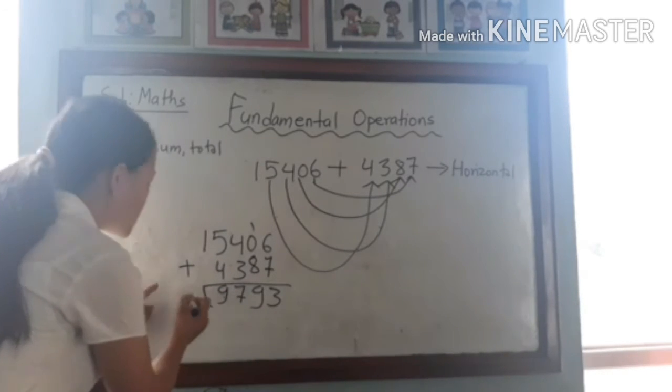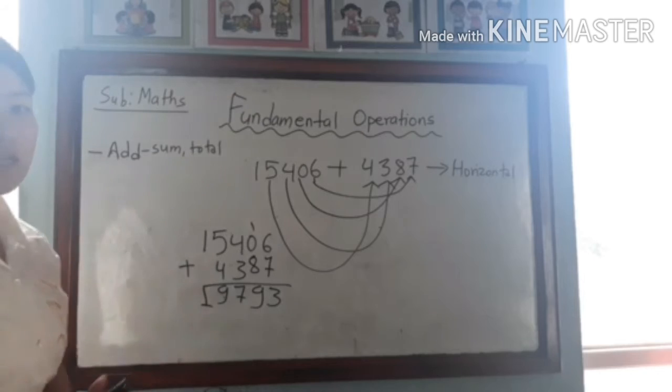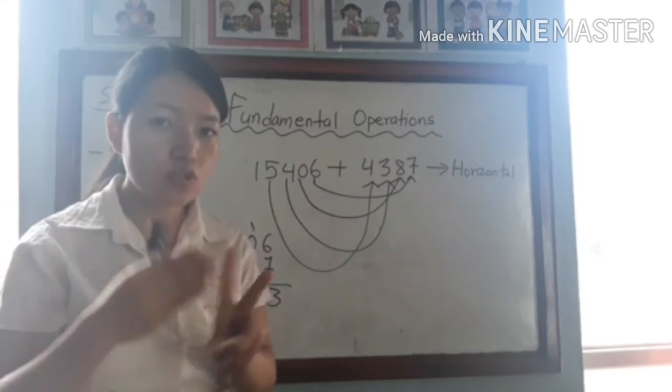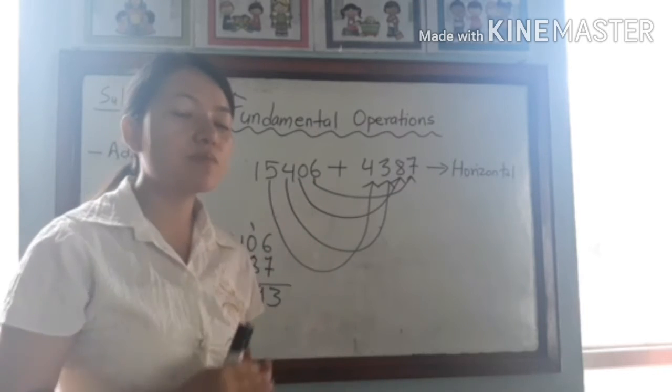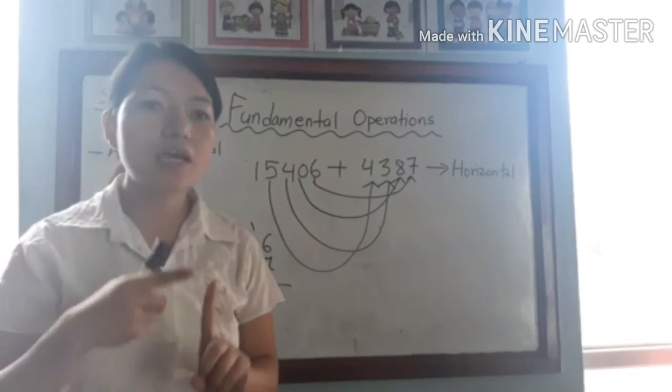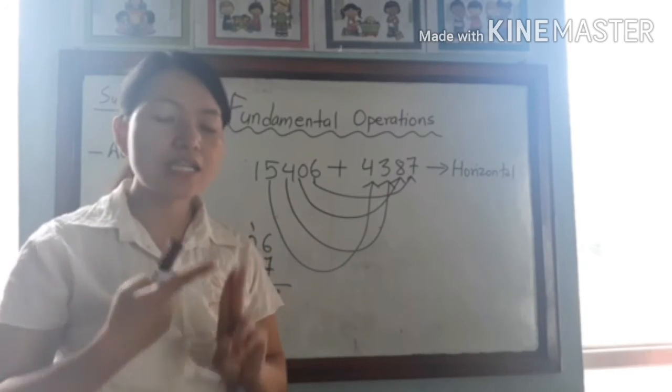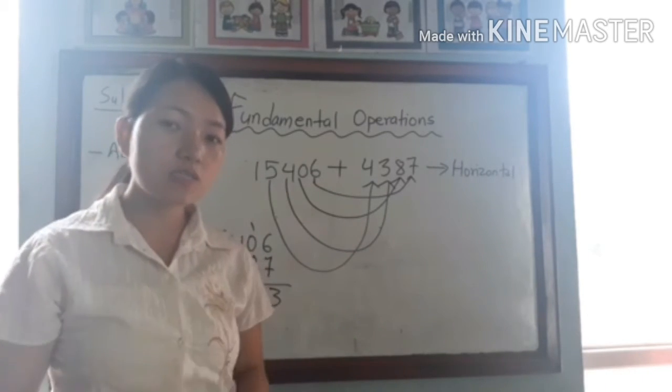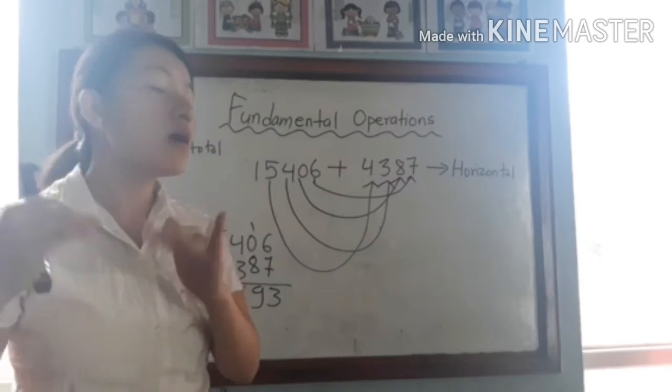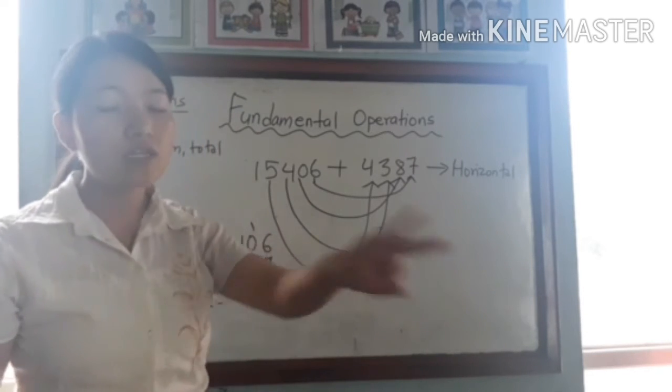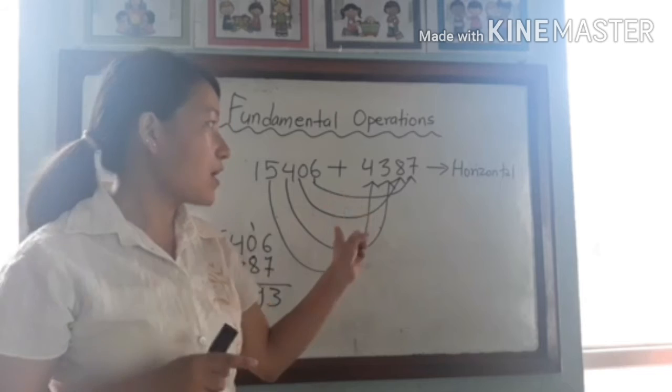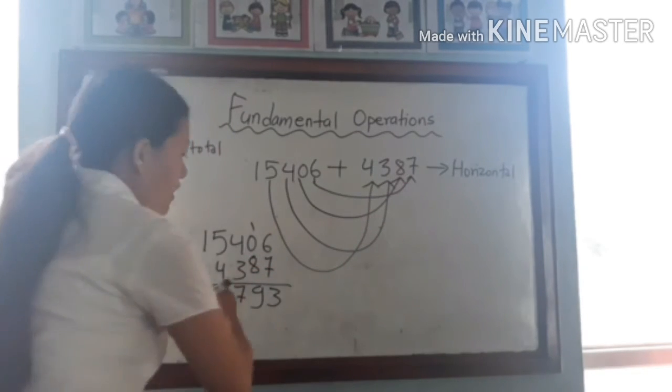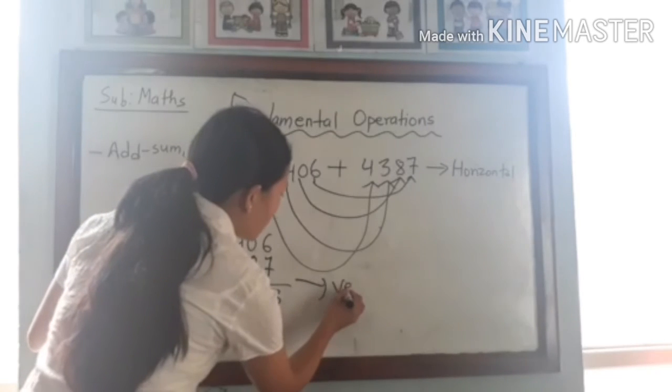One will be 1. This is the way we have to do addition. We have to remember two things: we have to arrange the numbers according to their place value. This is the way we are arranging according to vertical order.